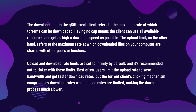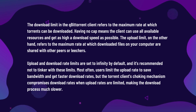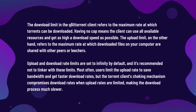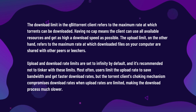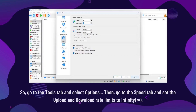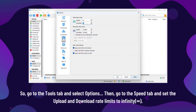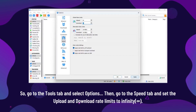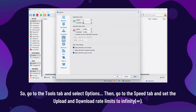Most often, users limit the upload rate to save bandwidth and get faster download rates, but the torrent client's choking mechanism compromises download rates when upload rates are limited, making the download process much slower. So, go to the Tools tab and select Options, then go to the Speed tab and set the upload and download rate limits to infinity.